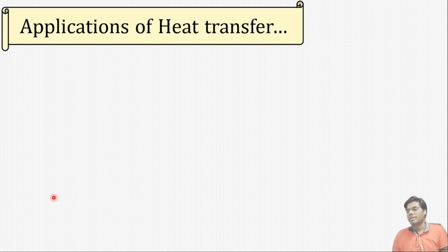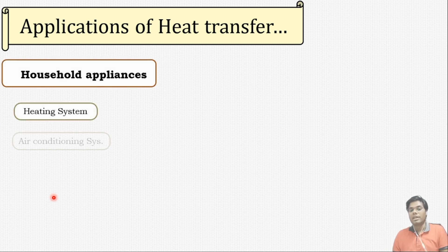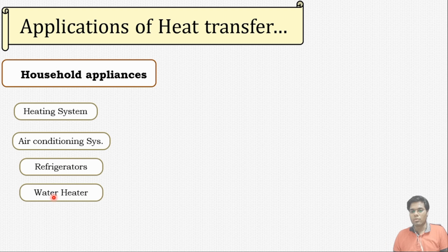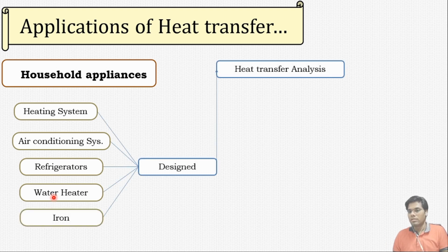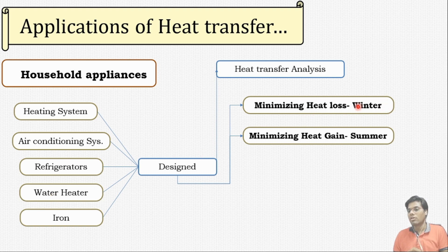What are the general applications of heat transfer? In day-to-day life we see heating systems, air conditioning systems, refrigerators, water heaters, and irons. All of these systems are designed on the basis of heat transfer analysis to minimize heat loss in the winter season and minimize heat gain in the summer season.